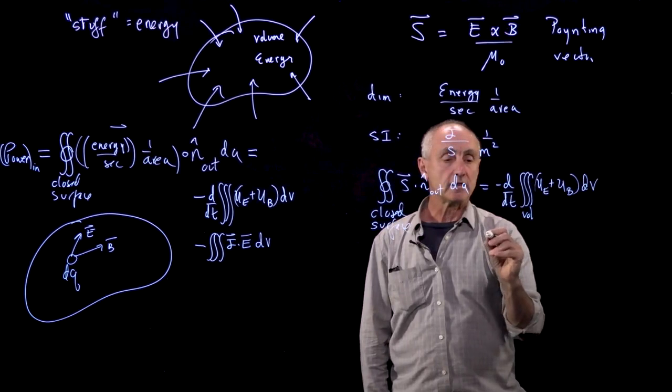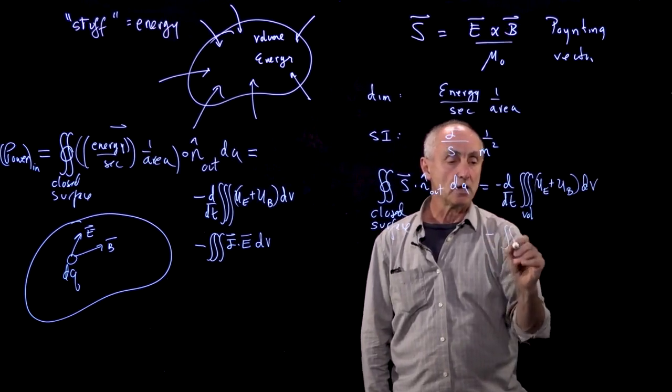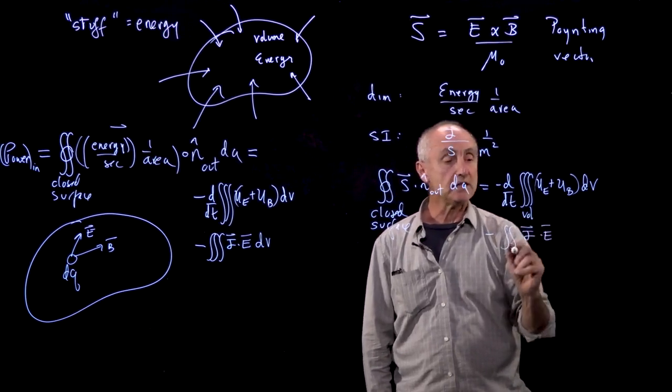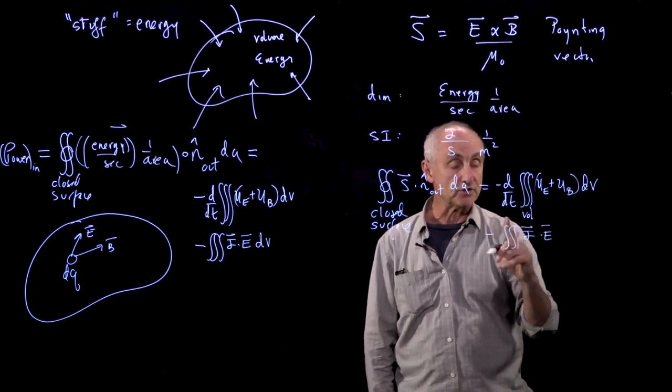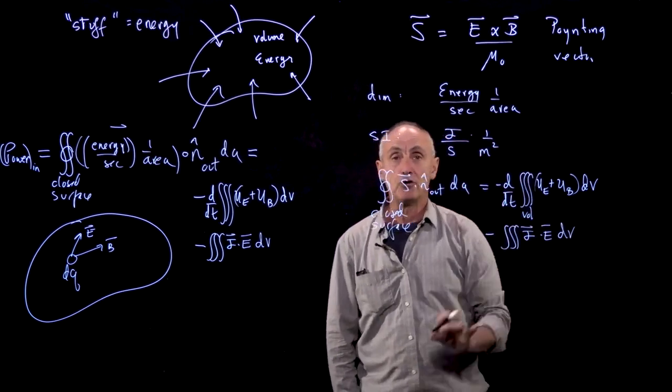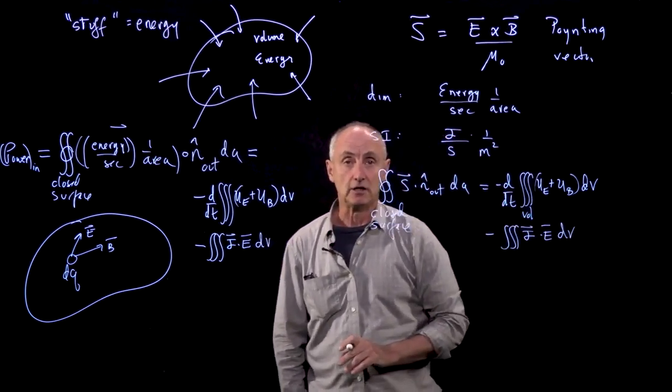Or that there is work done by the electric field on the charges in that volume of space. This is the rate of doing work, dV. And this is energy conservation in electromagnetism.